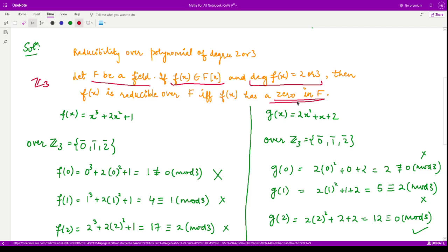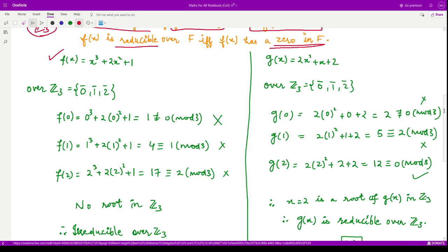That means if we find any one root of that polynomial in the given field, we conclude that it is reducible and not irreducible. For this polynomial f(x), our Z₃ contains only 0, 1, and 2. That means the remainders which are obtained when you divide any integer by 3. So the only remainders are 0, 1, and 2. The root must be from this field only.